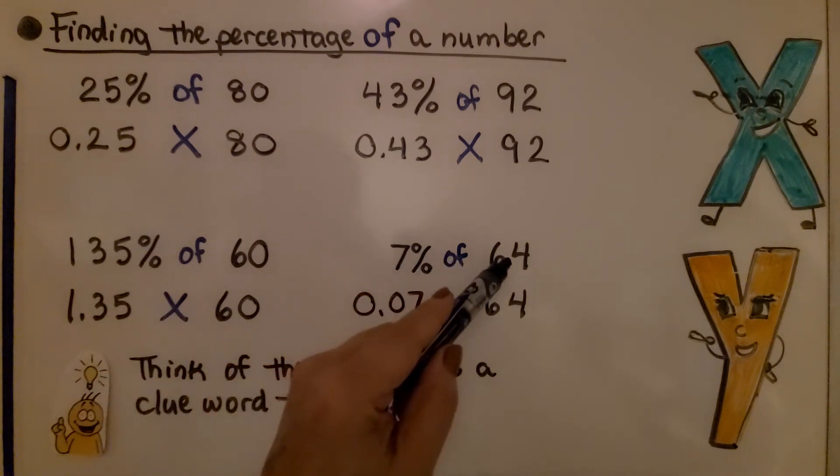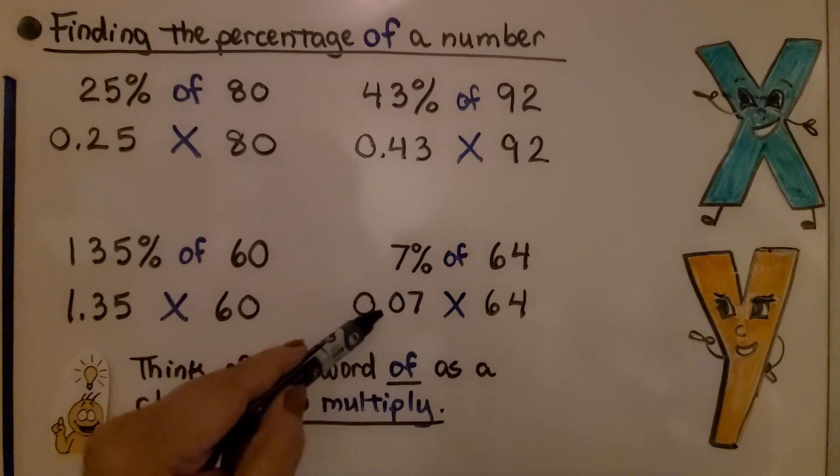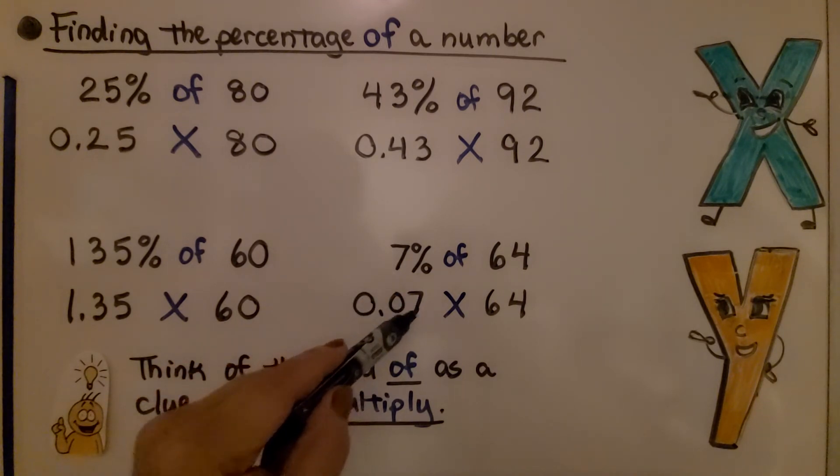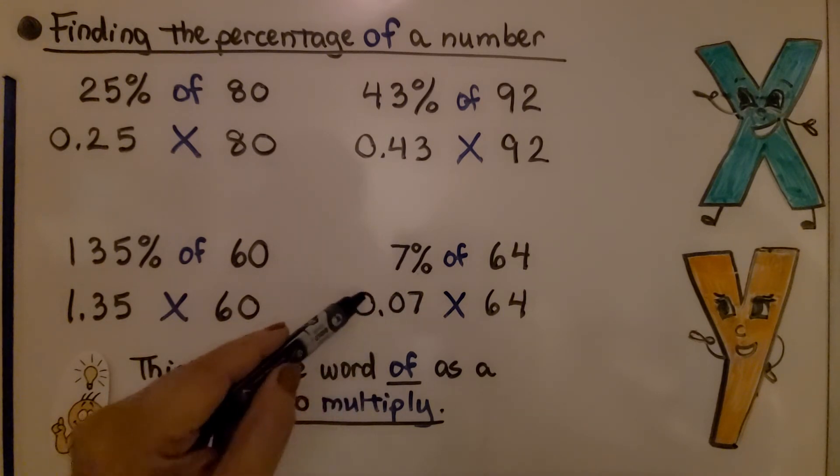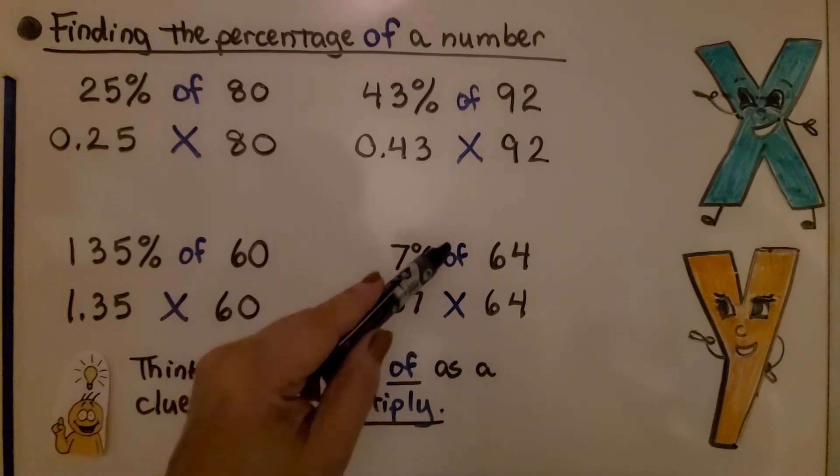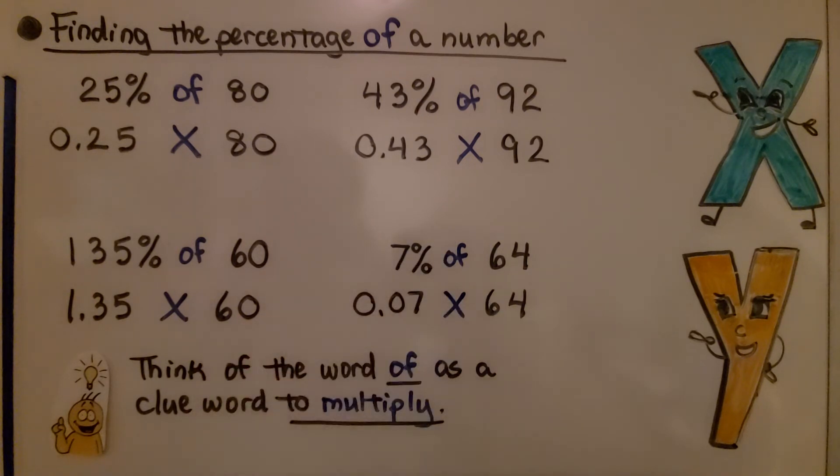7% of 64, we write the 7% as a decimal as 0.07. Remember, it's going to be in the hundredths place, so it's going to have a 0 between the 7 and the decimal point. 7% is 0.07, and that's times 64. Just think of the word of as a clue word to multiply.